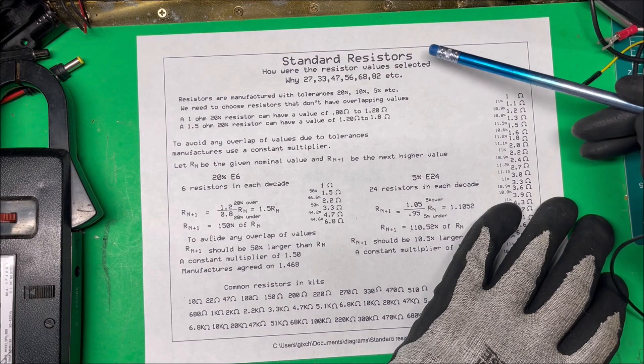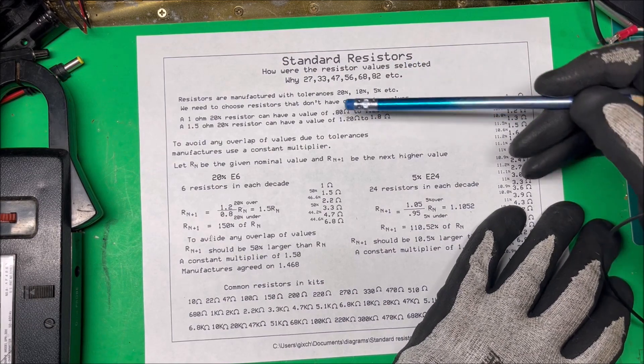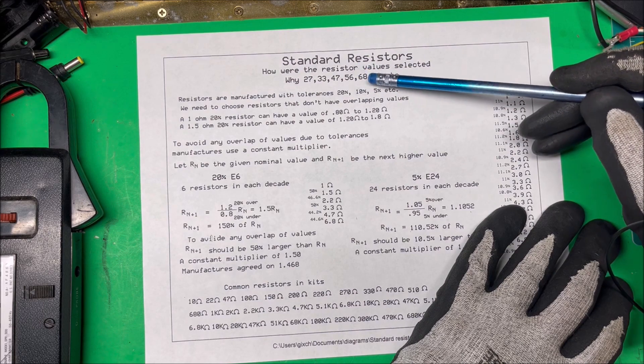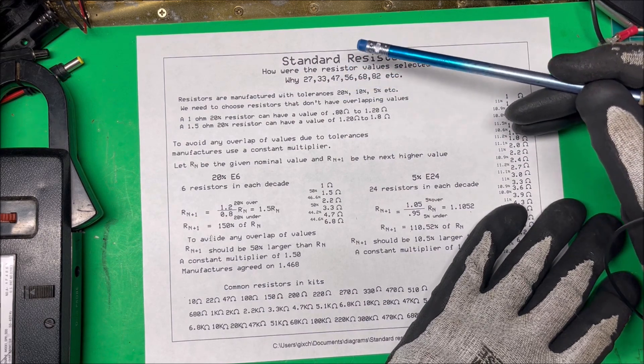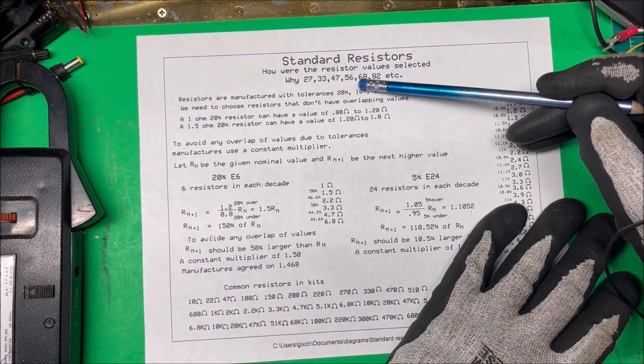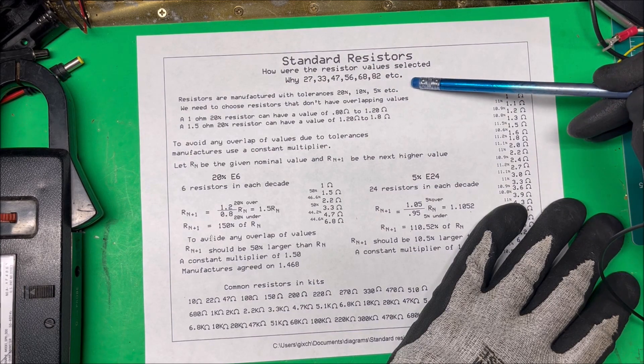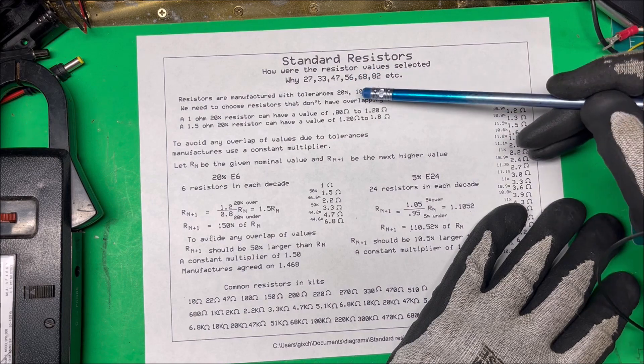Let's talk about resistors and how the resistor values were selected. How did they come up with 27, 33, 47, 58, and so on? Resistors are manufactured with tolerances - twenty percent, ten percent, five percent, etc. Most of them these days are five percent or below, but they started out at twenty percent.